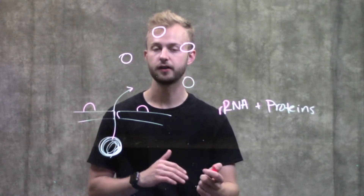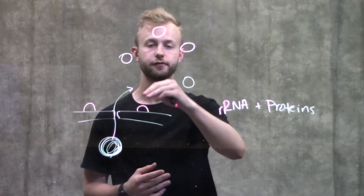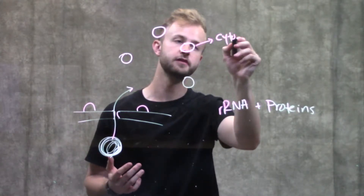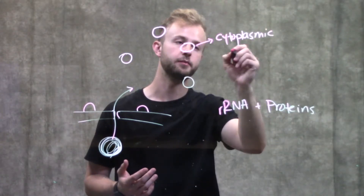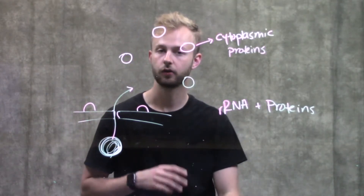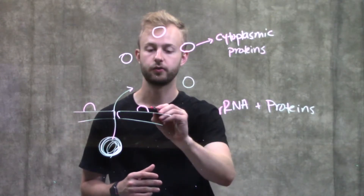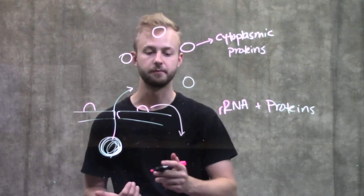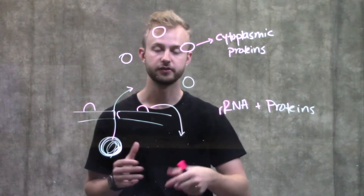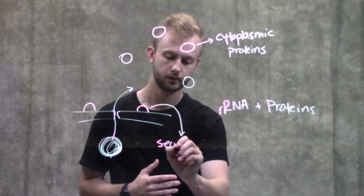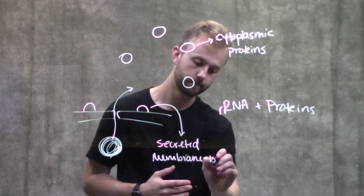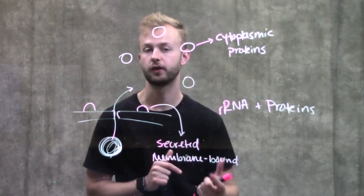Once ribosomes are in these two different spots, they're specialized to make different kinds of proteins. Free ribosomes in the cytoplasm make cytoplasmic proteins — things that stay in the cytoplasm. The ribosomes on the surface of the rough ER or on the nuclear envelope make proteins that will be embedded in the membrane, packaged into another organelle, or put into a vesicle to be secreted from the cell. So they make different kinds of proteins depending on where they are in the cell.